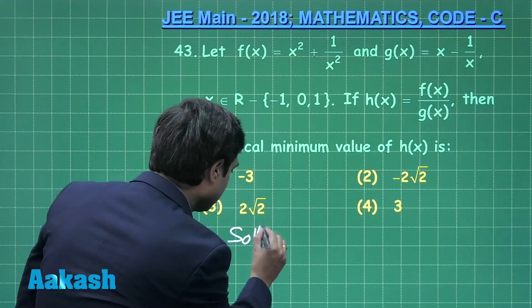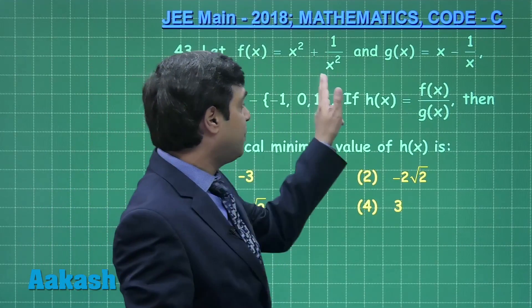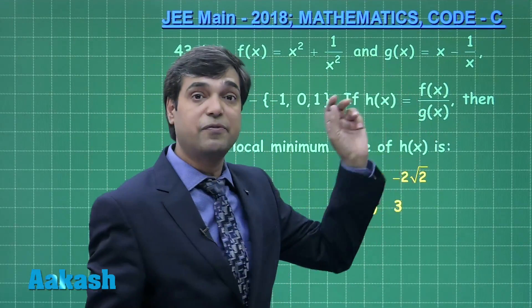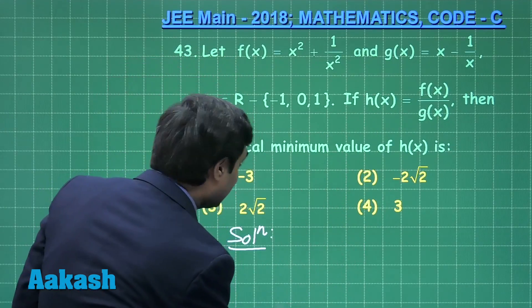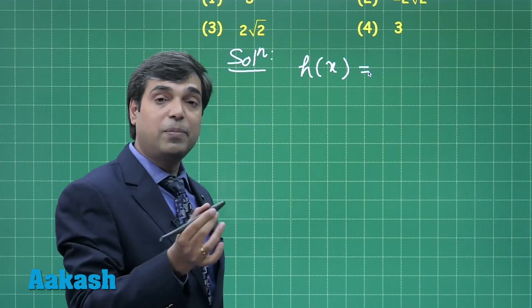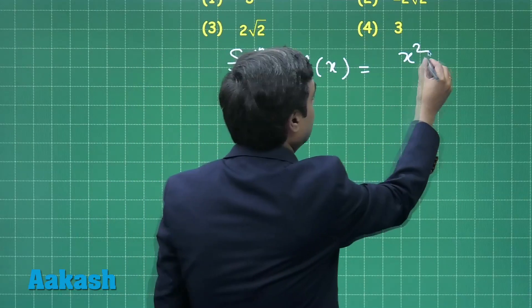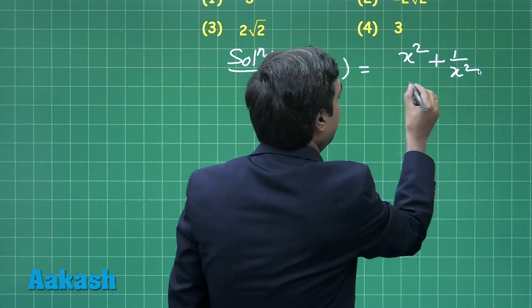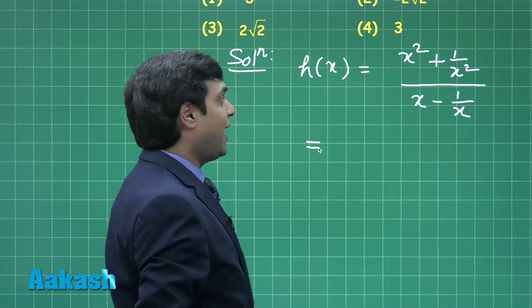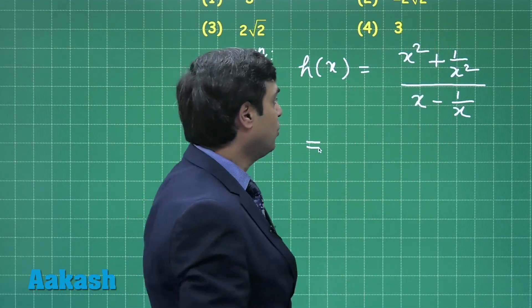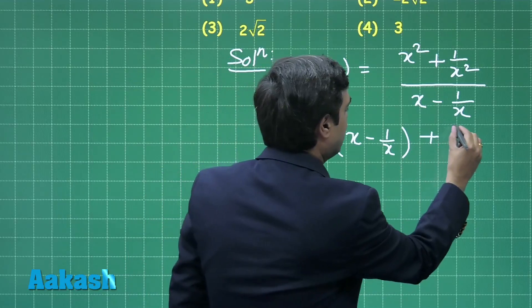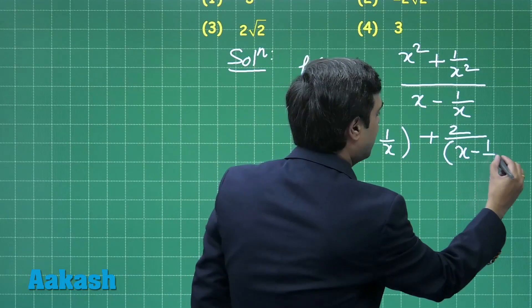f(x) is x² + 1/x² while g(x) is x − 1/x. We have to evaluate h(x) = f(x)/g(x). Starting this, h(x) equals (x² + 1/x²) divided by (x − 1/x), which can be rewritten as (x − 1/x)² + 2 upon (x − 1/x).